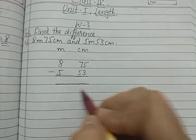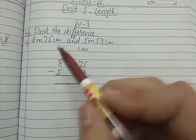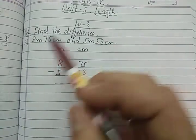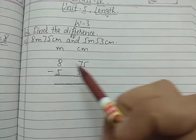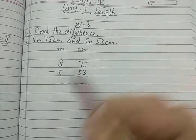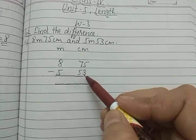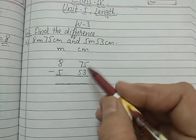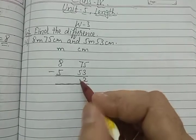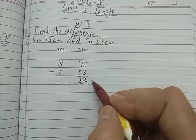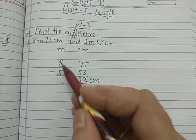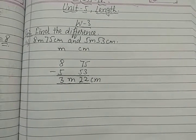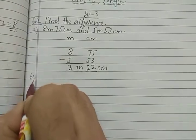One important thing: we cannot separate the meter and centimeter values — they must stay as pairs (8 meter 75 centimeter, and 5 meter 53 centimeter). Now subtract. Here 75 is greater than 53, so there is no need to borrow. We directly subtract: 5 minus 3 is 2, and 7 minus 5 is also 2. So that is the centimeter part. Then meters: 8 minus 5 is 3 meter. So the answer is 3 meter 22 centimeter.